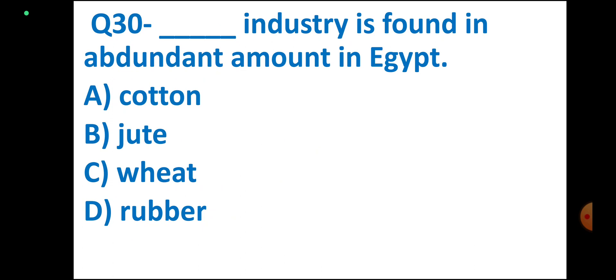Question number 30. DASH industry is found in abundant amounts in Egypt. Options: Cotton, Jute, Wheat, Rubber. Correct answer: Cotton. Students, if you like this video, please subscribe to my channel. Thank you.